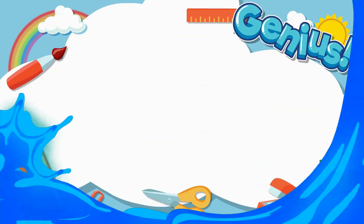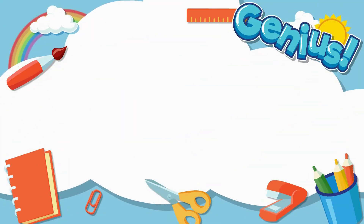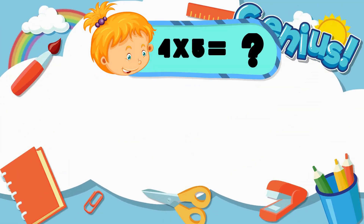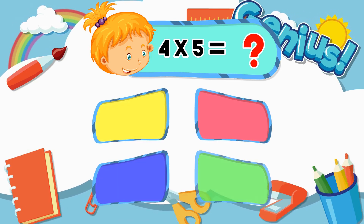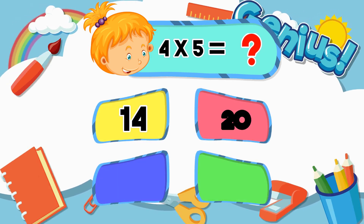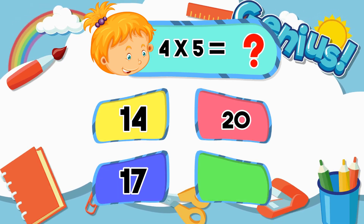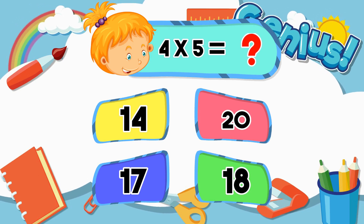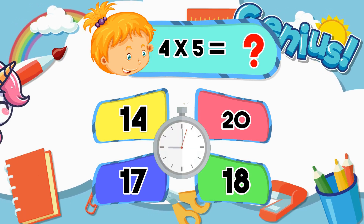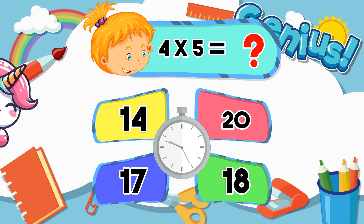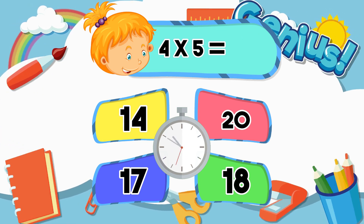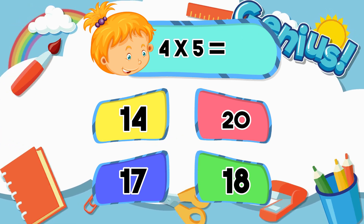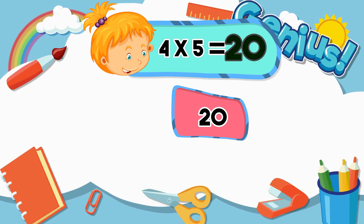What is four times five? Options: Fourteen, Twenty, Seventeen, Eighteen. Answer: Twenty.